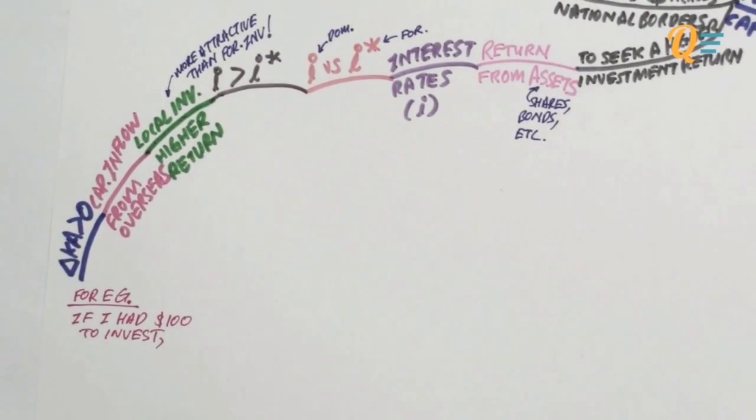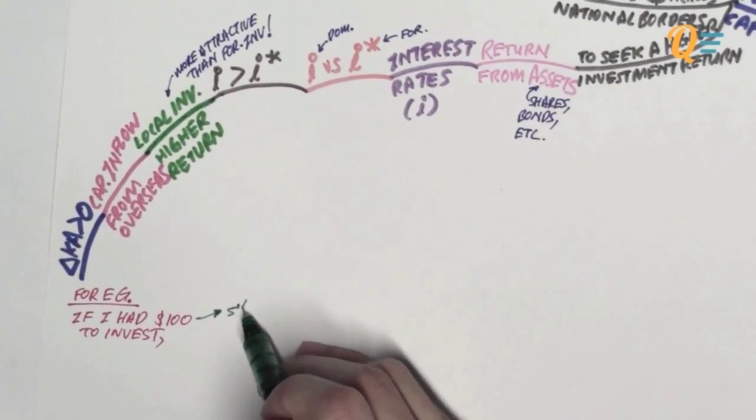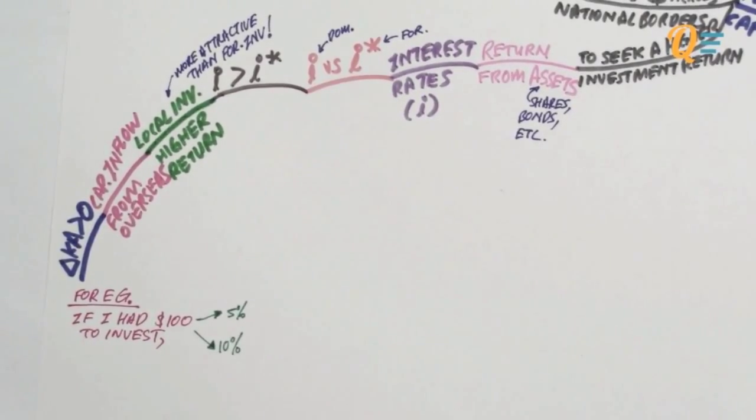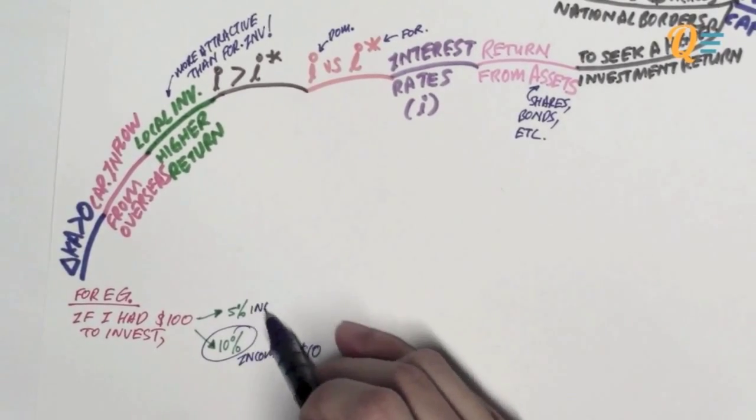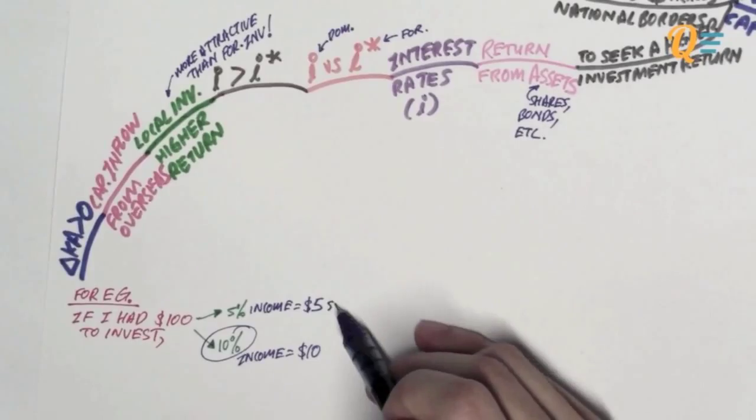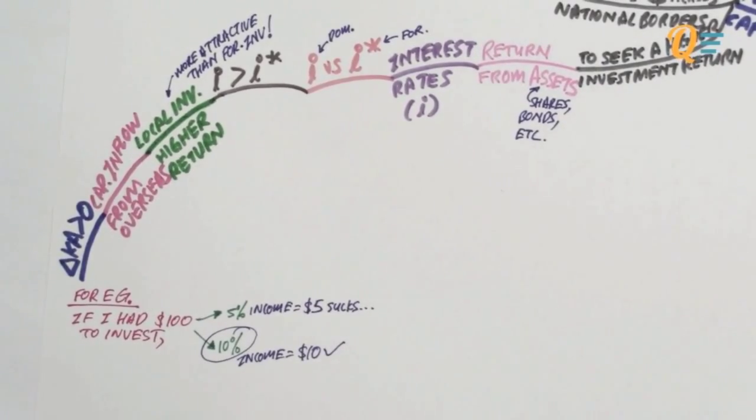So for example, if I had $100 to invest and I have got two options, an asset giving me 5% and another asset giving me 10%. So I will prefer the 10% interest rates because it gives me an income of $10 as compared to an income of only $5 if I were to invest my money into the 5% interest rate asset.